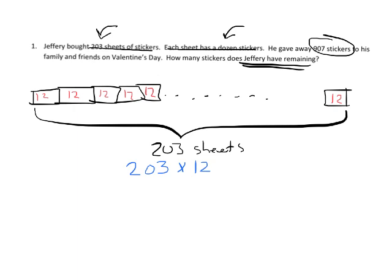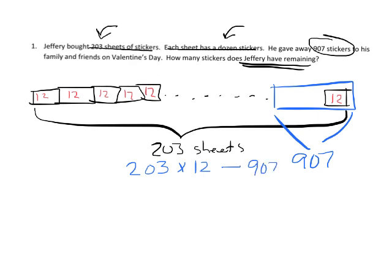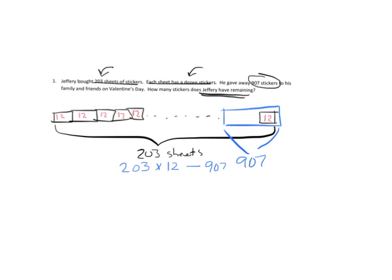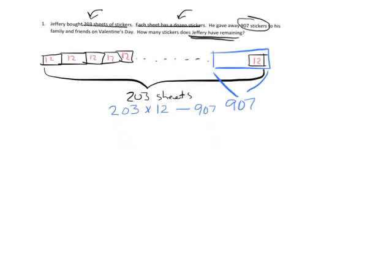We then need to chop off the final 907 stickers, because that's how many he gave away. So once we've done 203 times 12, we're then going to subtract 907, and that's going to tell us how many stickers Jeffrey has left over. So let's shrink this a little bit, move that up, and get working.